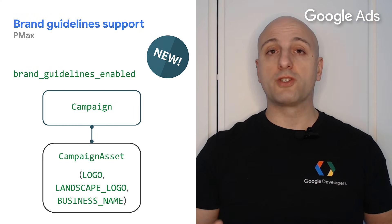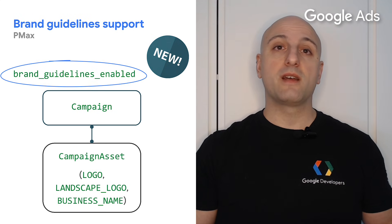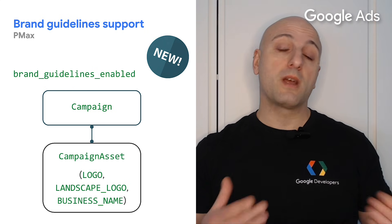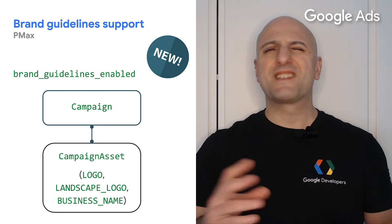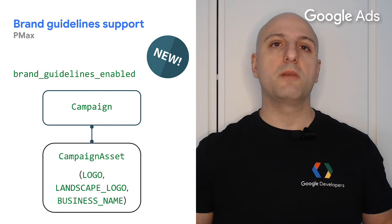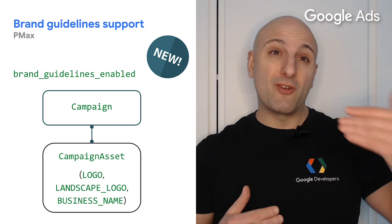Let's get started with new features in the Performance Max space. The first one is brand guidelines. With brand guidelines, advertisers can control how their brand is represented in Pmax campaign automated assets to ensure brand identity is respected. In v19, you can create brand guidelines enabled campaigns via the Google Ads API by setting the brand guidelines enabled flag when creating a campaign, and linking brand assets like logos and business name to the campaign using the campaign asset resource — rather than through an asset group as with non-brand-guidelines Pmax campaigns.